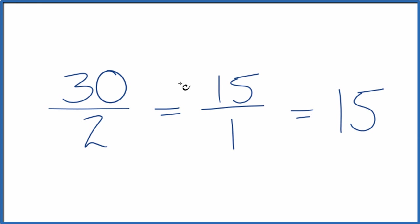So in answer to our question, 30 over 2 can be simplified down to 15 over 1, and then you can write that as 15.